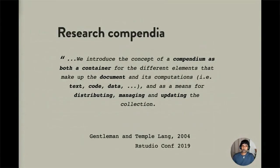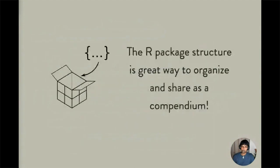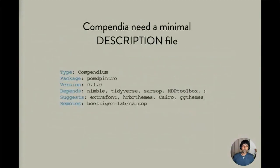I'd like to introduce you to the concept of a research compendium. The original idea, proposed by Robert Gentleman and Duncan Temple Lang, is that you can ship a collection of data, code, and text together as a compendium, which can then be easily shared, managed, and updated. If you're interested in learning more, I gave a longer talk on this at the 2019 RStudio conference — linked in the slide. It turns out that R package structure is ideally suited for a compendium because R packages contain a description file.